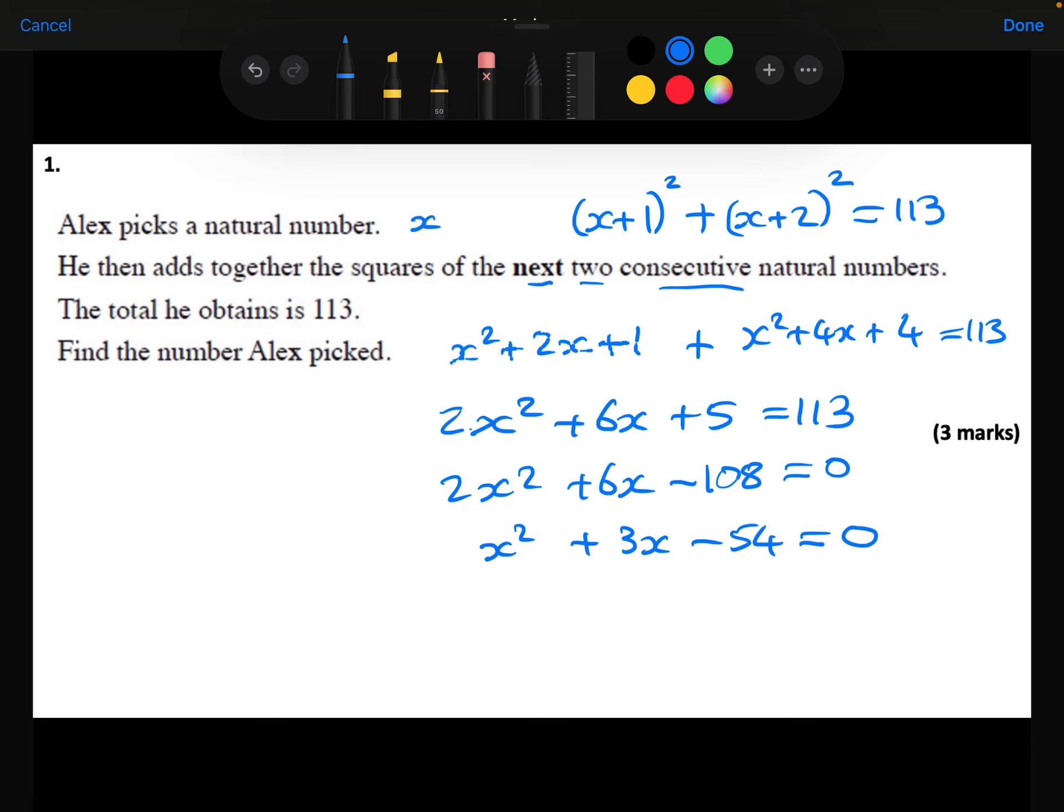And now I'm going to factorise this. So I'll have x. Two numbers that multiply to make minus 54 and add together to make 3. They're going to be 9 and minus 6. So x is either minus 9 or 6.